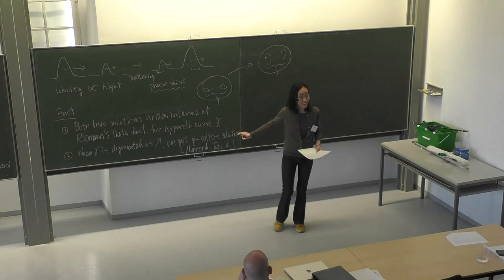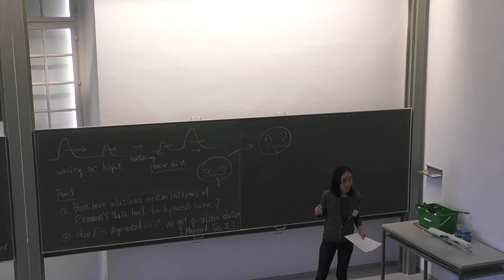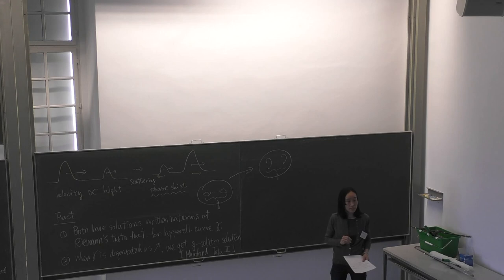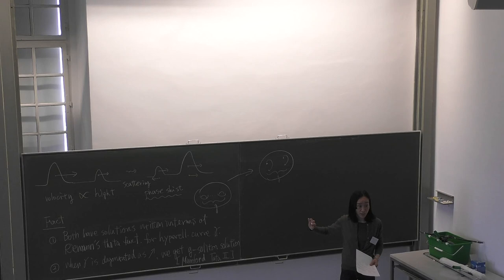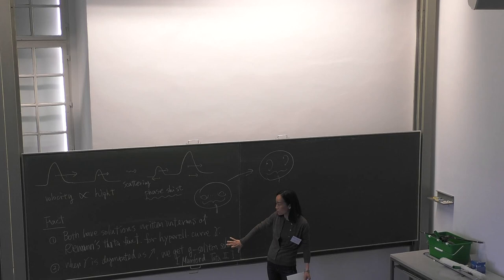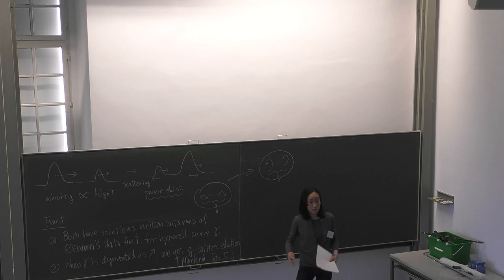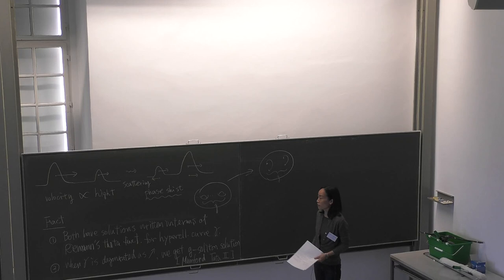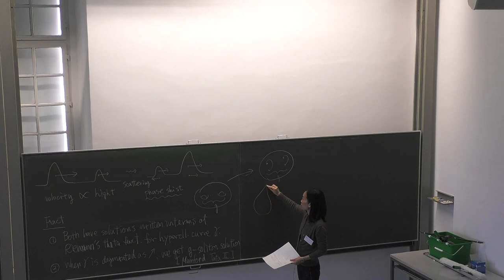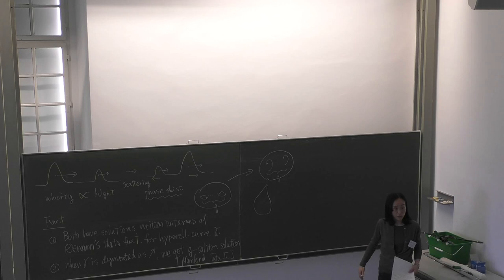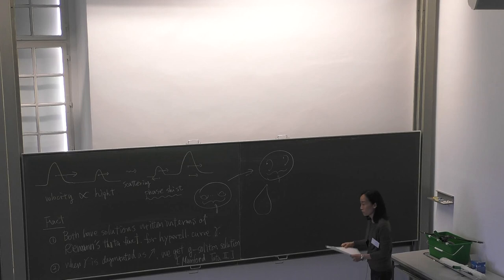The genus g should be greater than or equal to one for soliton solutions. There is also a rational solution for the genus zero case. By degenerating the curve further to a more singular curve, we get rational solutions characterized by Schur functions. So this was a brief historical story for these equations.